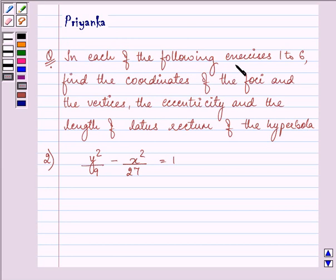It says, in each of the following exercises, 1 to 6, find the coordinates of the foci and the vertices, the eccentricity and the length of the latus rectum of the hyperbola.